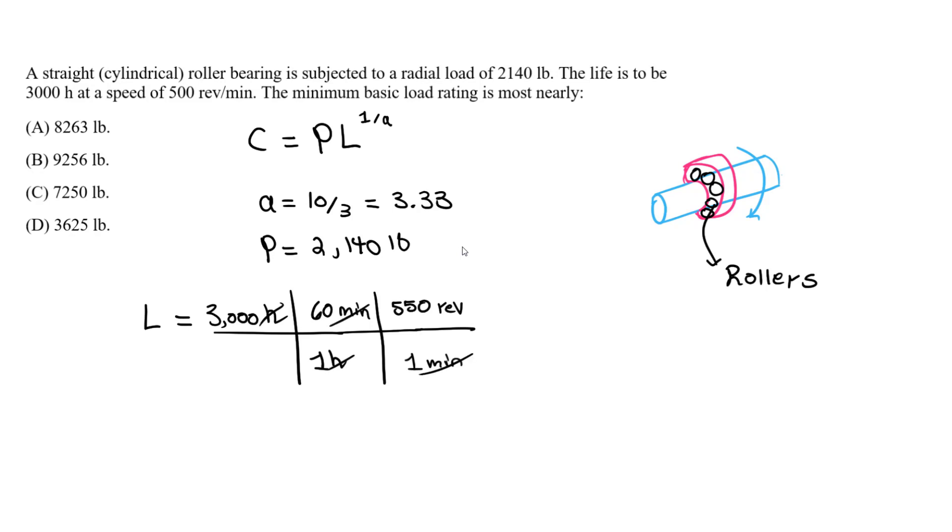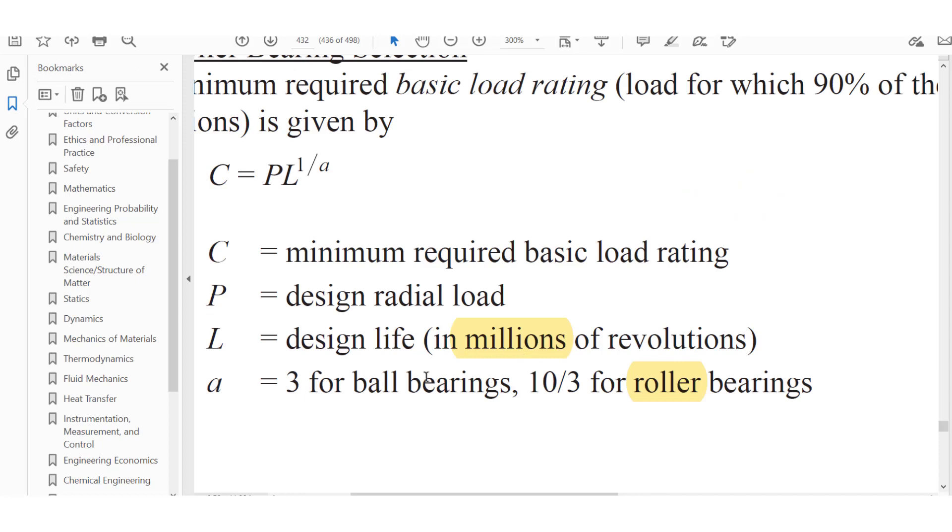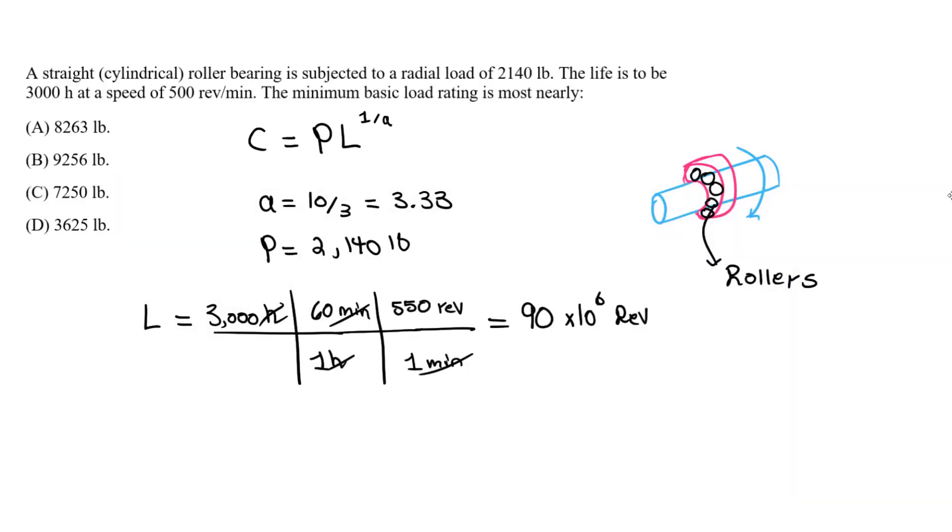So these cancel, these cancel. We get revolutions here and you should get 90—this will be 90 times 10 to the sixth. So I want it in millions. So when we plug in our value, we will just plug in 90. It's essentially 90 times 10 to the sixth revolutions, but this portion—we're not going to put it in here for the L value. We're just going to put in 90 because it's accounted for when you look; it's going to be in millions of revolutions. So we just plug in this 90. So now we're just going to solve for C.